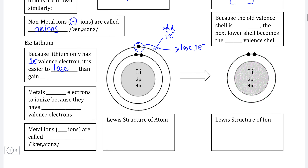Well, if we do that, we can see that lithium's previous valence shell — the second shell — is now empty because it gave away its valence electron to another element. Therefore, the first shell is the only electron shell that remains, and because it is the only shell, it by default is now the valence shell. The first shell can hold a maximum of two electrons, and lithium already has two, so lithium has achieved a full valence shell by losing electrons rather than gaining them.